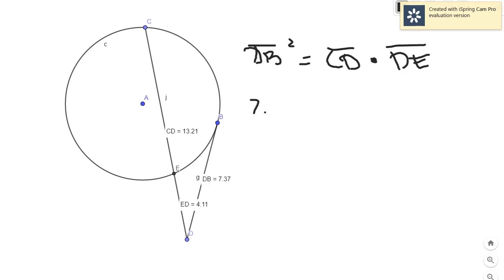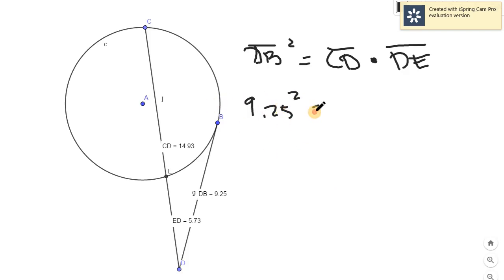So for example, let's move the point. Let's move it here. So it would give us a different value. Let's try to solve: the tangent is 9.25 squared, and the secant line is 14.93 times 5.73.